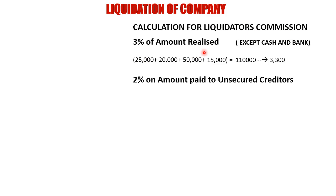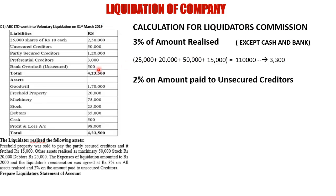The second rate is 2% on the amount paid to unsecured creditors. Unsecured creditors total: Rs. 50,000 (direct) + Rs. 1,05,000 (unsecured portion of partly secured) + bank overdraft = Rs. 1,55,500. However, the receipt side total is only Rs. 95,500, so we cannot pay the entire unsecured creditor amount.